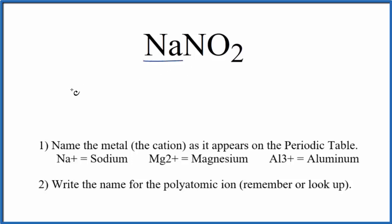First we write the name for the metal, that's the sodium. Next we're going to write the name for the polyatomic ion NO2, that's the nitrite ion. So the name for NaNO2 is sodium nitrite.